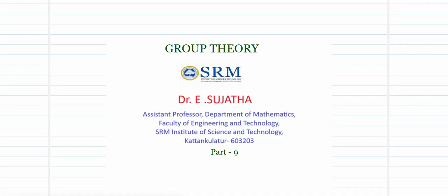Hello friends, welcome to this ninth video on the series of group theory. This video will talk about rings and fields. If one algebraic system is not going to be supported by one binary operation, we define one more binary operation. When more than one binary operation supports the system, we define a concept of ring and extend it to the concept of field.